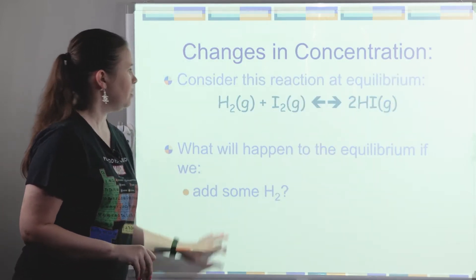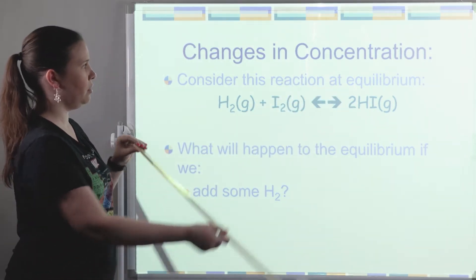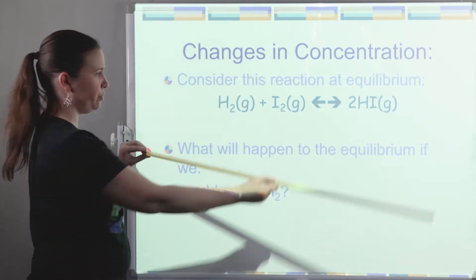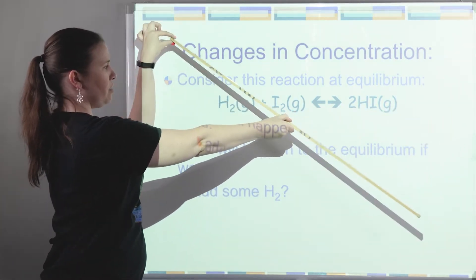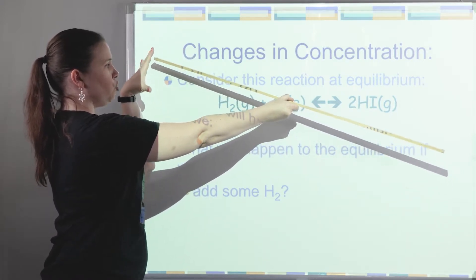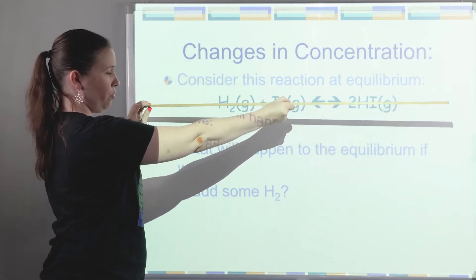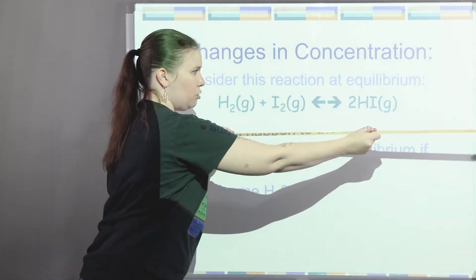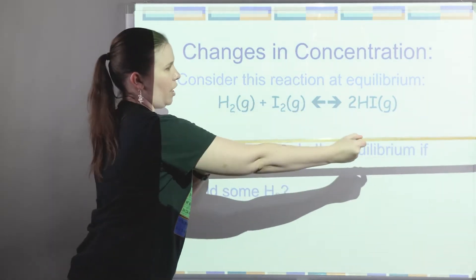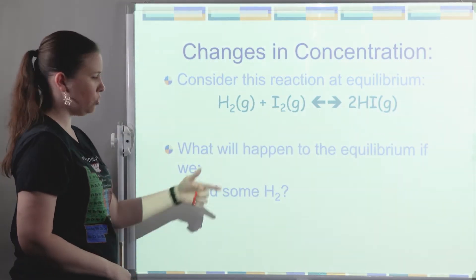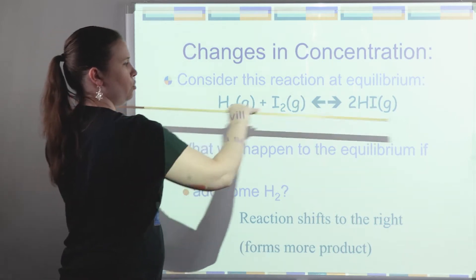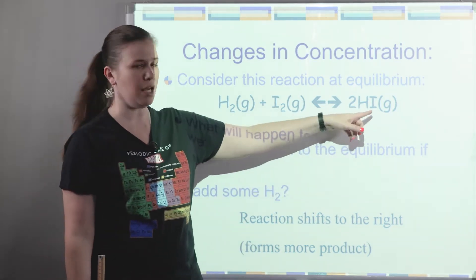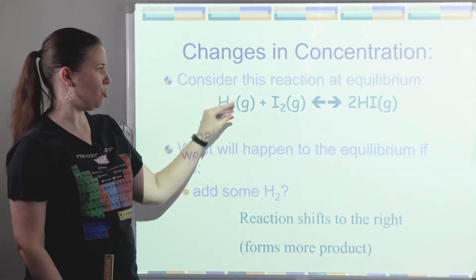Say I have hydrogen and iodine gas in equilibrium with hydroiodic acid. At equilibrium, everything is balanced. What would happen if we added some extra H₂? The system has been stressed by adding more reactant. The fix will be to use up that extra H₂ — we want to remove it. The forward reaction would use up the H₂, so the reaction would shift to the right, favoring the forward reaction. The side effect is that we're going to form more HI, and you'll see a decrease in I₂ concentration.